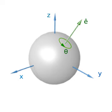In spherical geometry, a direct motion of the n-sphere is the same as a rotation of (n+1)-dimensional Euclidean space about the origin. For odd n, most of these motions do not have fixed points on the n-sphere and, strictly speaking, are not rotations of the sphere; such motions are sometimes referred to as Clifford translations. Rotations about a fixed point in elliptic and hyperbolic geometries are not different from Euclidean ones. Affine geometry and projective geometry have no distinct notion of rotation.